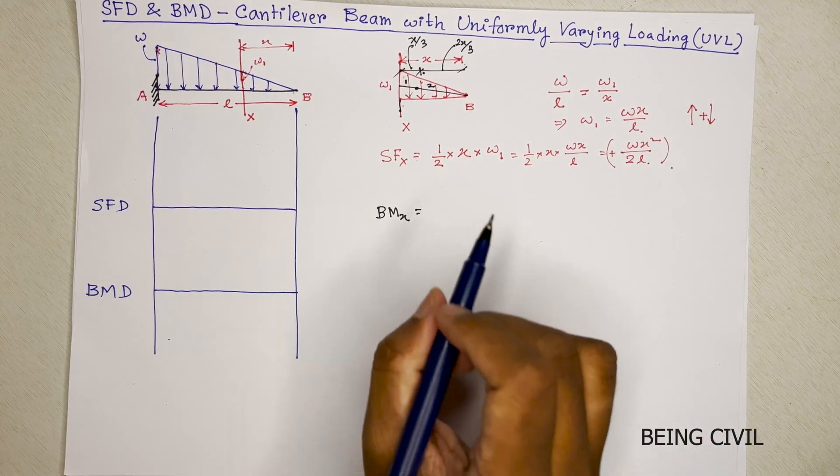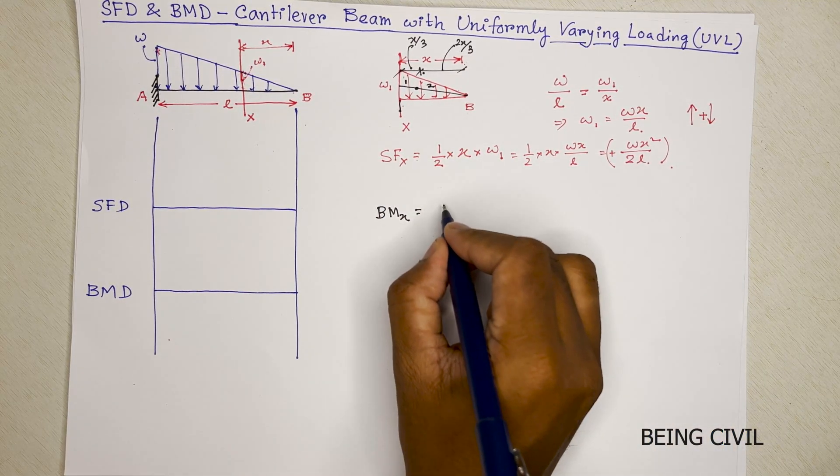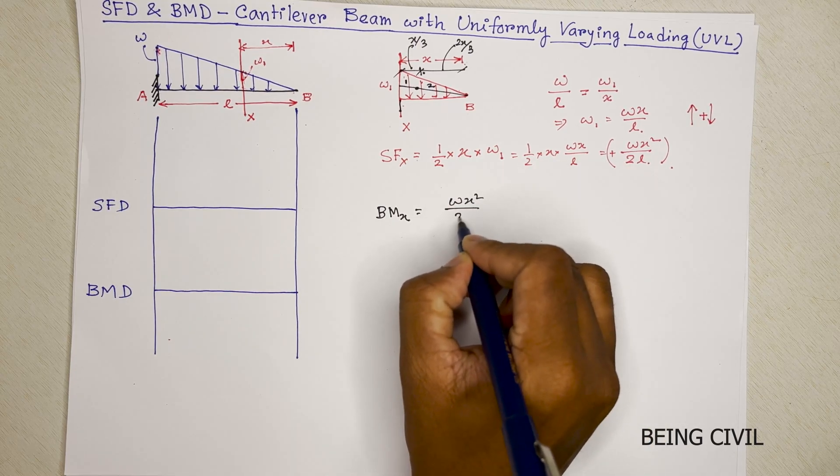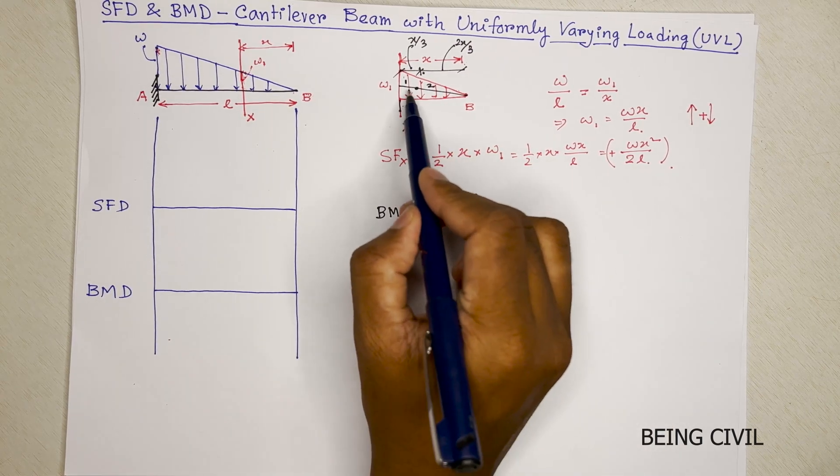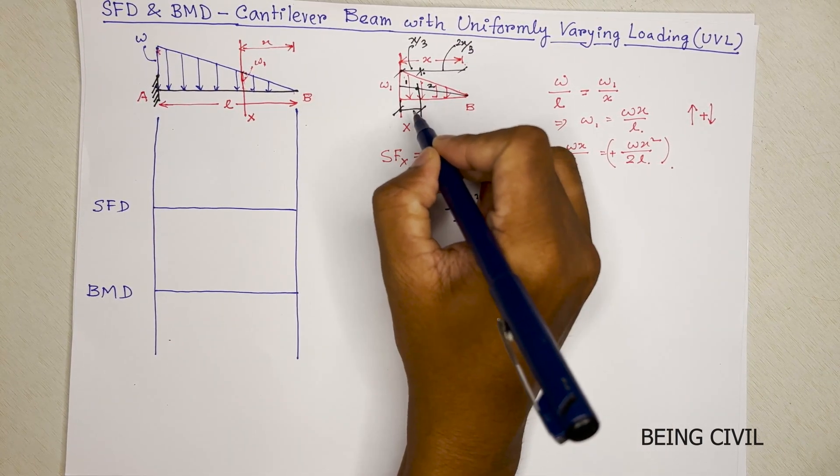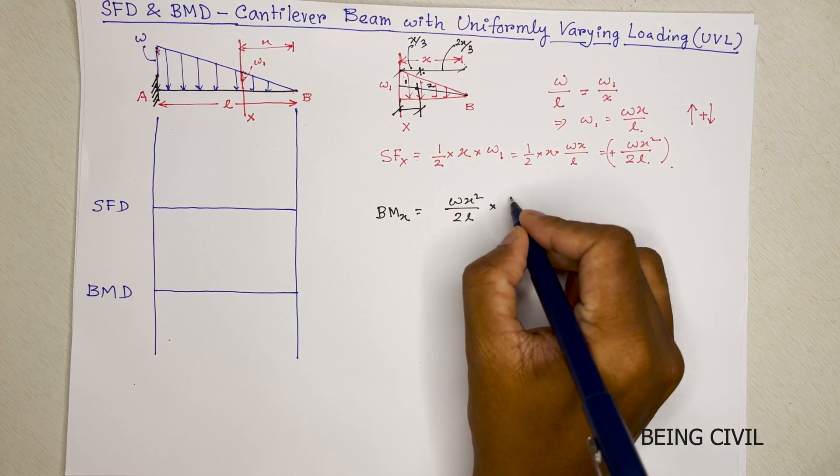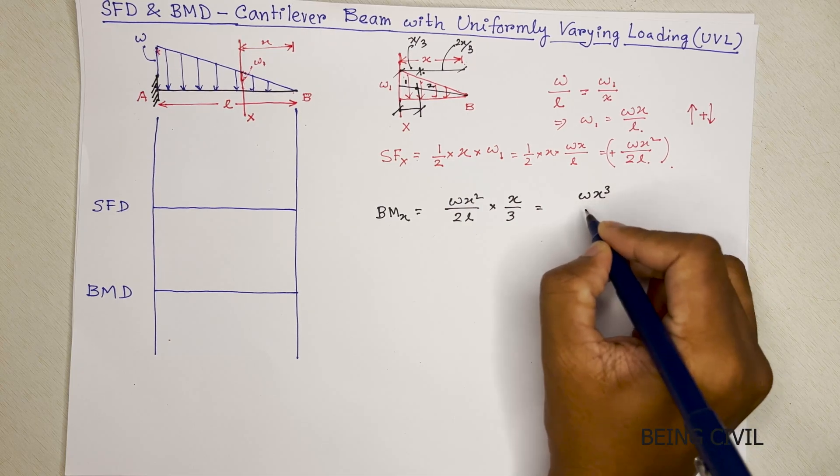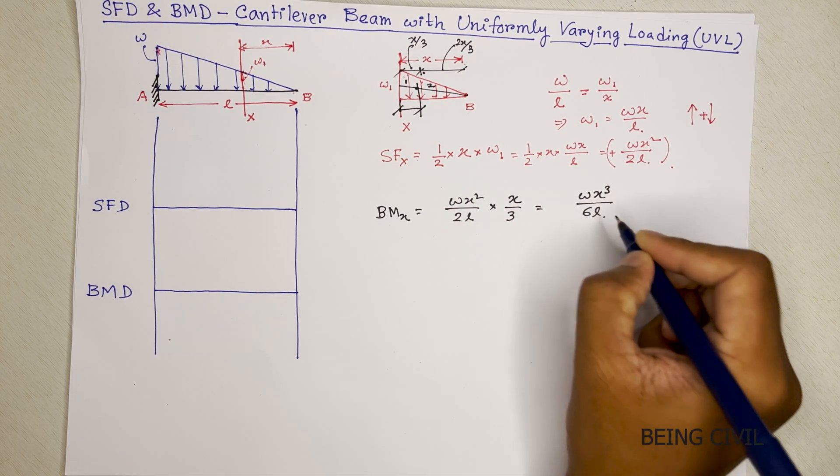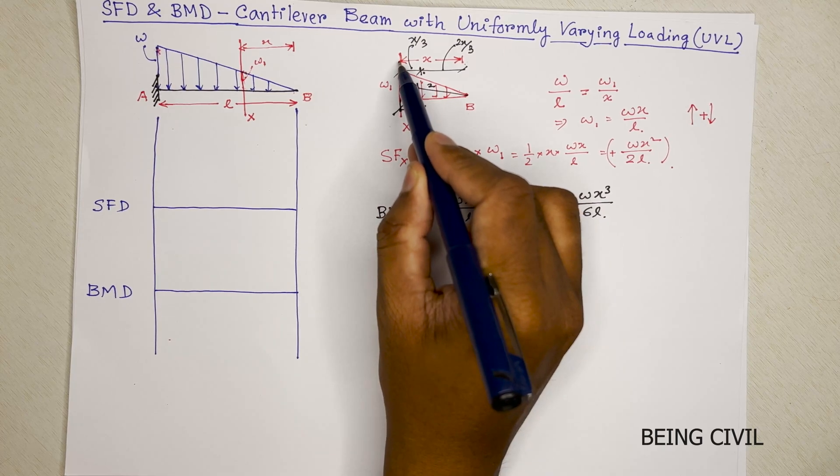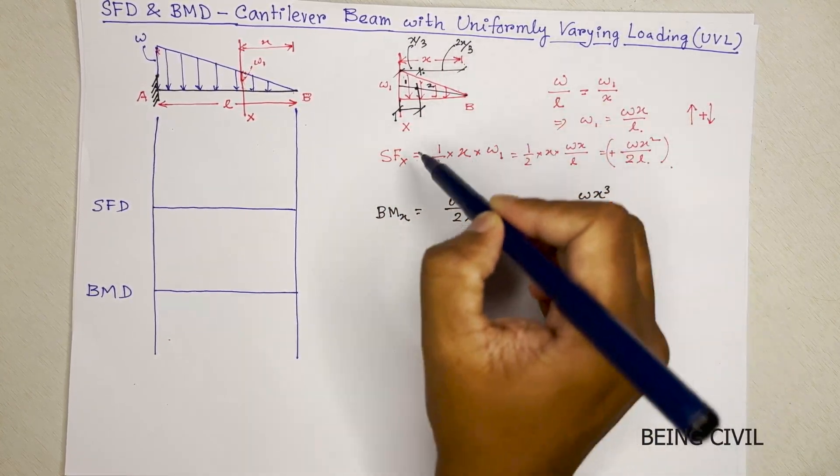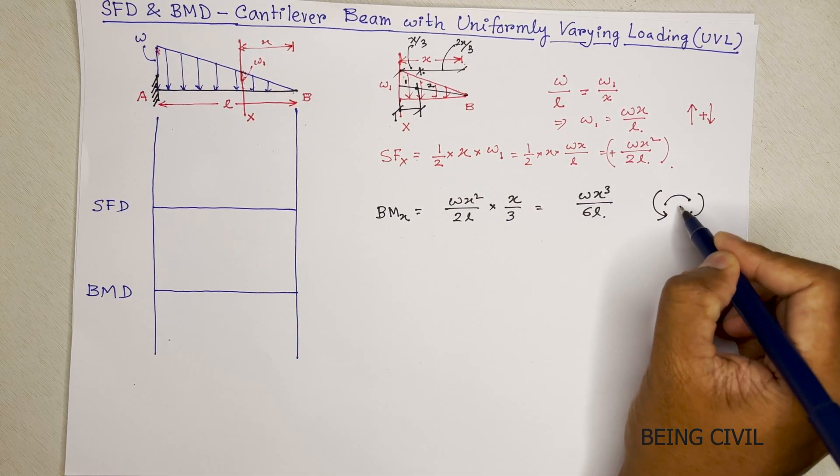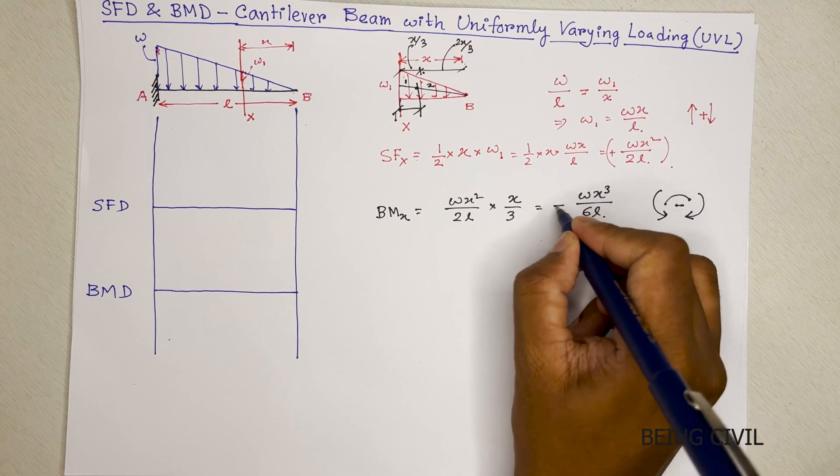The bending moment is total load of the triangle which is nothing but this Wx square by 2L into the CG distance which is x by 3. So Wx cube by 6L. And the nature of the moment at this section is like this, hogging moment negative, so this will be negative.